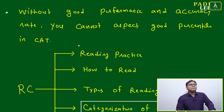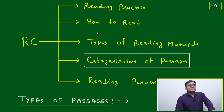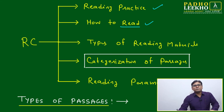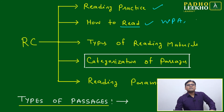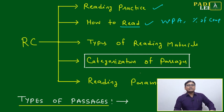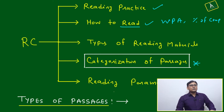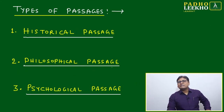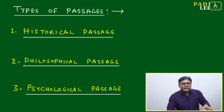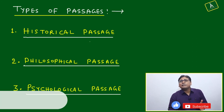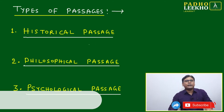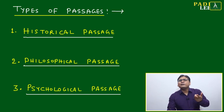RC is most important not only for Verbal Ability but for CAT itself. RC consists of these key areas: reading practice, how to read (reading principles), how to improve your WPM, how to improve your comprehension skill, types of reading material, and categorization of passages. Today we are covering categorization. There are reading parameters as well. I will not be able to elaborate each passage type in one Master's Talk, but I will give you the list and hints.